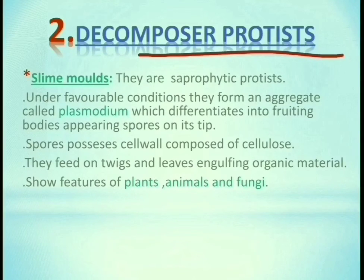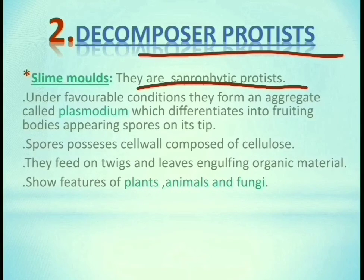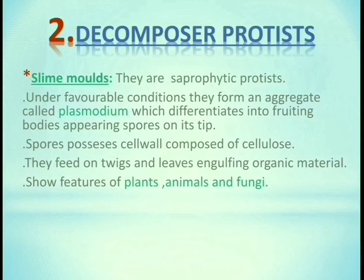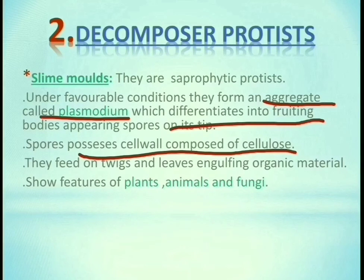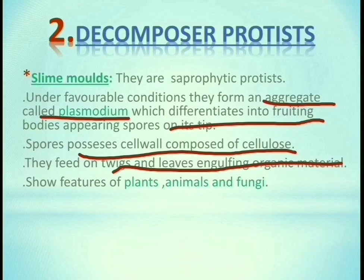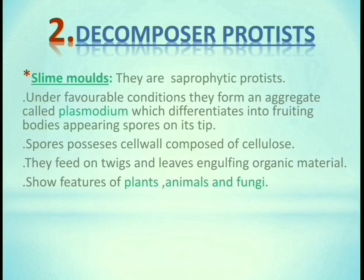Next we will read about decomposer protists, in which we discuss slime molds. They are saprophytic protists — that means they feed upon dead organisms. Under favorable conditions, they form an aggregate called plasmodium, which differentiates into fruiting bodies that bear spores. Spores possess cell walls composed of cellulose, showing the property of plants. They feed on twigs and leaves by engulfing organic material, showing characteristics of plants, animals, and fungi.